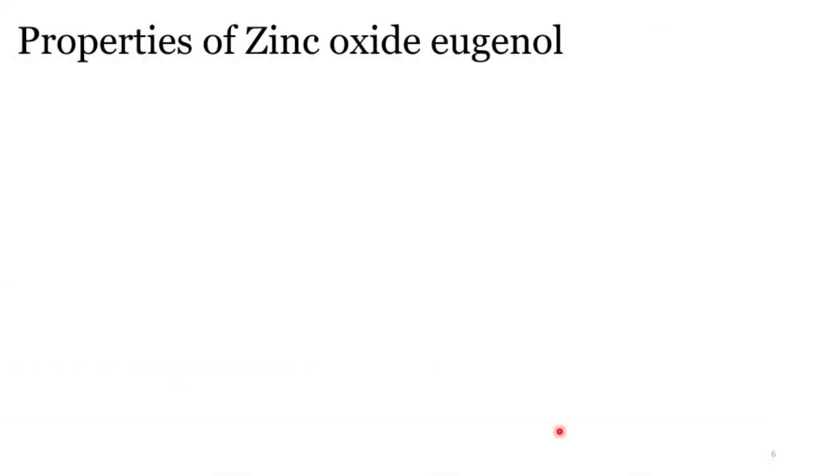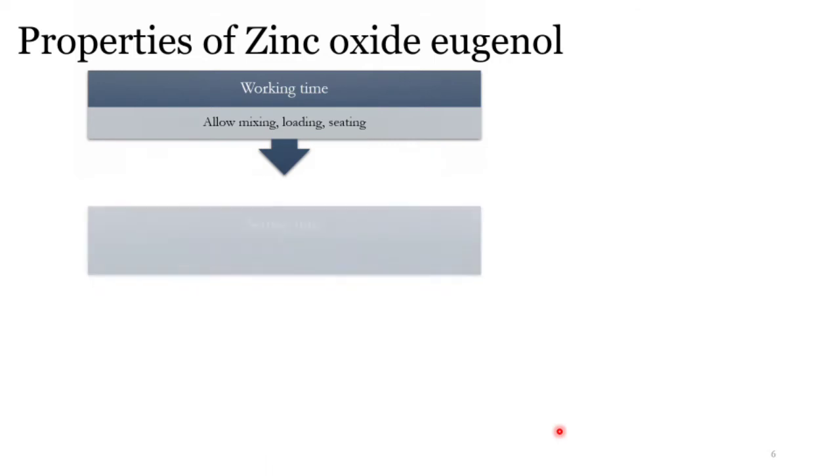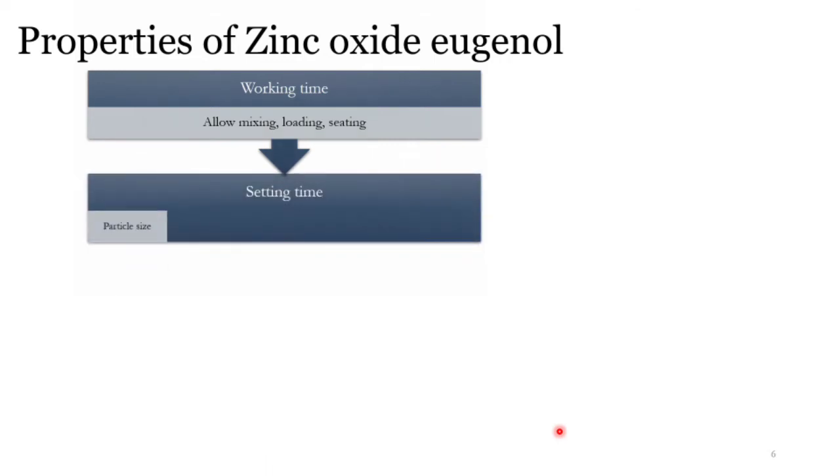The properties you should know: First, working time. It should have sufficient working time to allow mixing, loading, and seating of the impression material. If it has very short setting time, we won't be able to work it properly. Setting time is dependent upon particle size. When zinc oxide particle size is small or if it's non-coated, it will set faster. You can vary the length of base and accelerator paste, but it's not recommended because altering paste length affects setting time, working time, and other properties, requiring recalibration. Mixing time also affects setting time—if you increase mixing time, the setting time also increases.